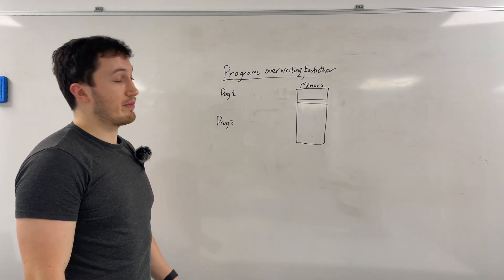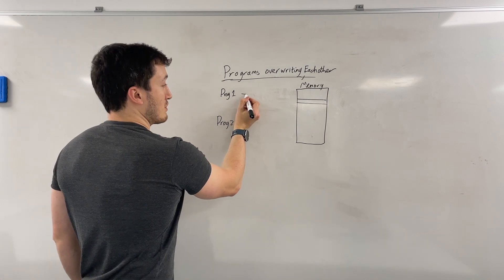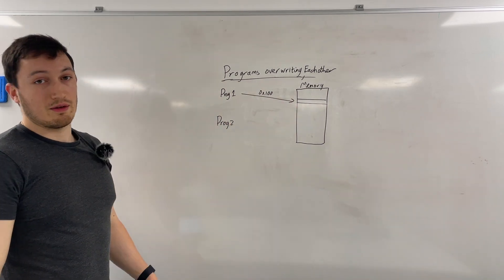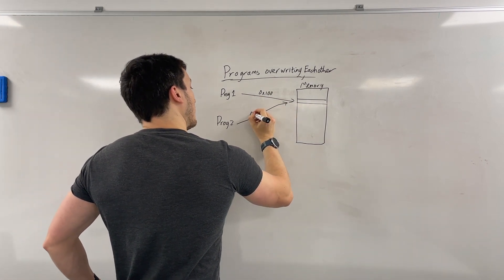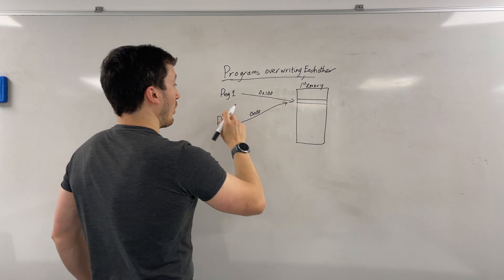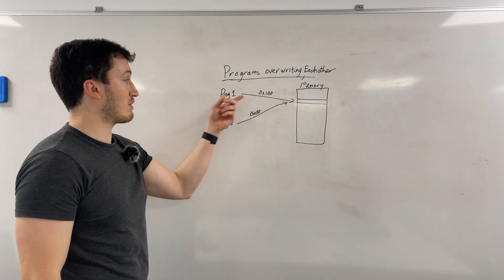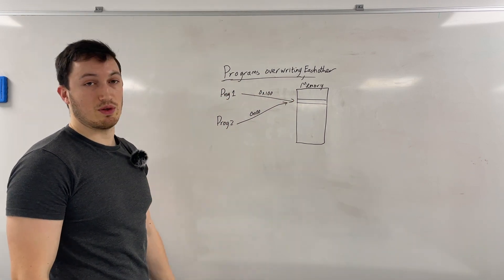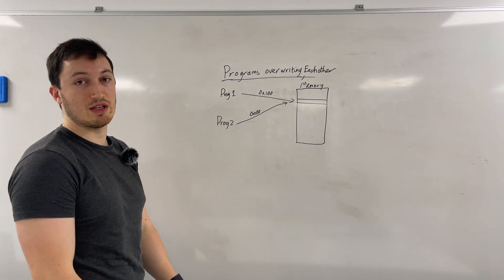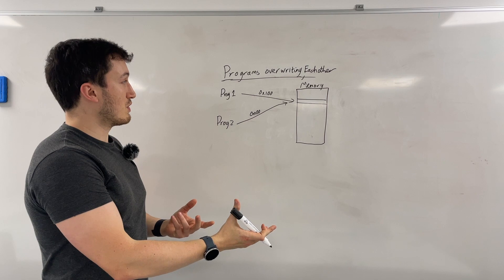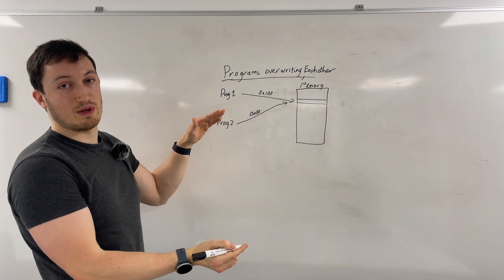So the third and final problem that virtual memory solves is in this scenario, program one, say, stores this address. Then you also have program two runs and it also wants to store something to this address. It will overwrite what program one stored in that address. So that if program one then tried to read it back, it would see it being corrupted by program two. So you have both of these programs accessing the same memory region when they're not supposed to. So virtual memory will give each program the illusion of the whole region of memory to itself. And it will provide translation such that they don't interfere and overwrite each one's data in memory.